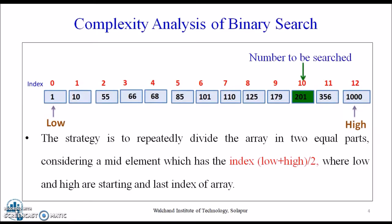For the complexity analysis of binary search, the strategy is to repeatedly divide the array into two equal parts, considering a mid element which has index (high + low) / 2, where low and high are the starting and the last element of the array, as shown in the visual given here.